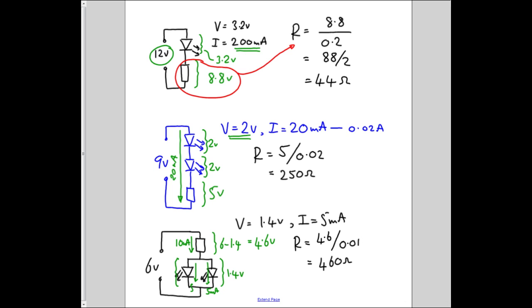So there we go. We've worked out our resistor values by taking the voltage across the resistor each time and the current through the resistor each time and using the resistor equation.